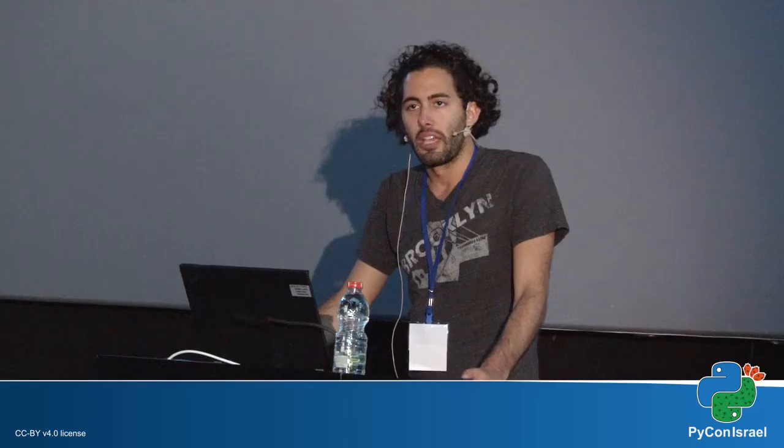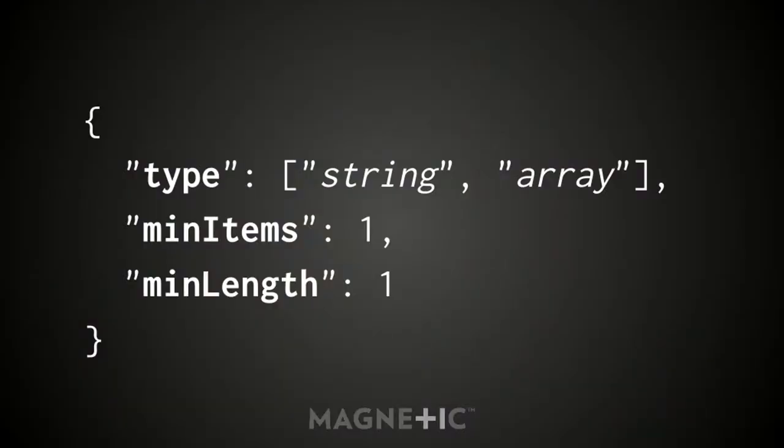Someone asks us to define a schema for a non-empty sequence, where sequence means either an array or a string. Because schema validation ignores properties that don't apply — min_items only applies to arrays, min_length only applies to strings — if you put both in the same schema and say the instance can be one of those two types, the inapplicable one is ignored. So this schema actually implements a non-empty sequence.